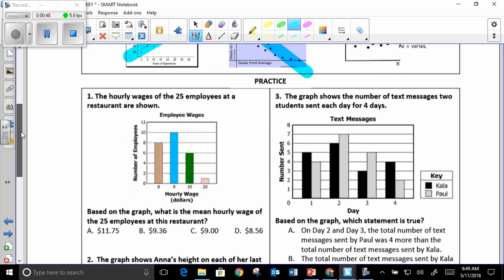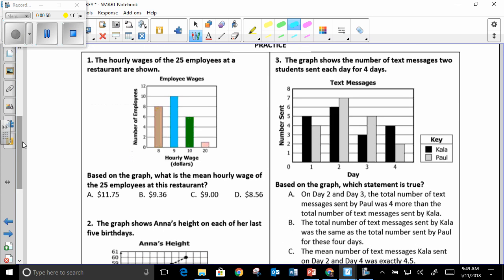Looking at number one, the hourly wages of 25 employees at a restaurant. A lot of students got confused with this one because you have 25 employees, which means you have 25 wages. I think that's where the confusion was because you have eight employees that made $8 an hour. So eight employees times $8 an hour gives you 64.